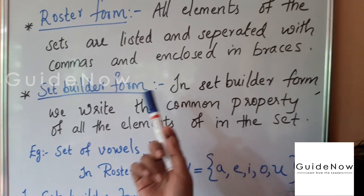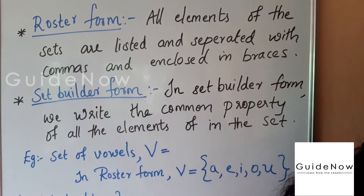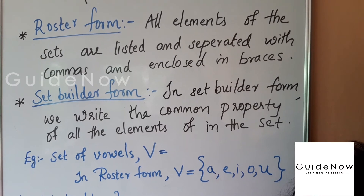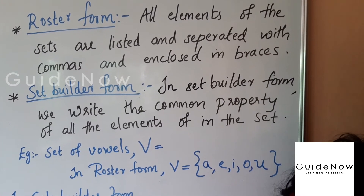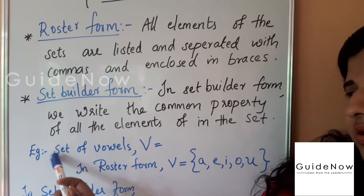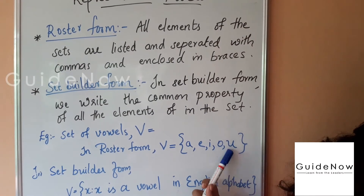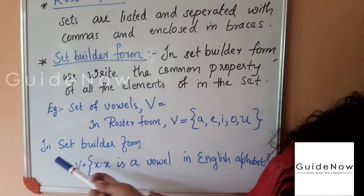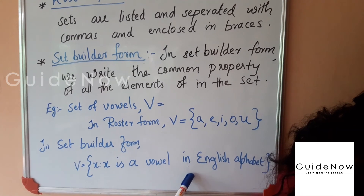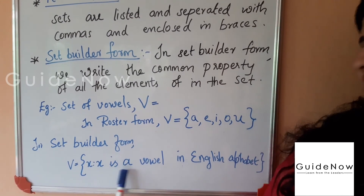The next representation is set builder form. In set builder form, we do not list all the elements — instead, we write only the common properties of the elements. For example, in roster form the set of vowels is written as V = {a, e, i, o, u}. In set builder form, we write V = {x such that x is a vowel in the English alphabet}.